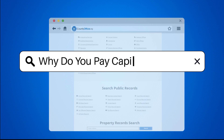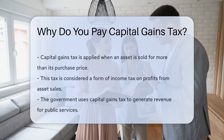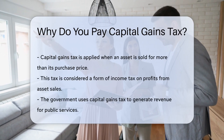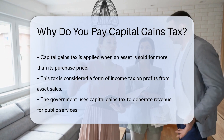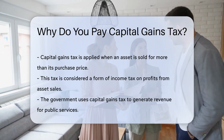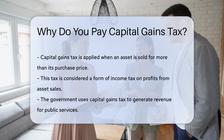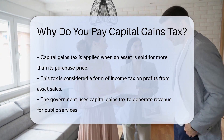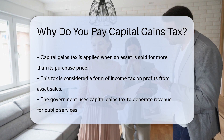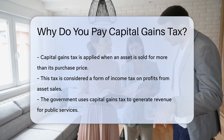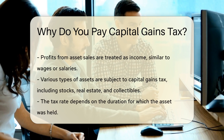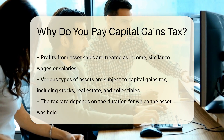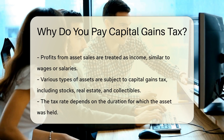Why do you pay capital gains tax? Capital gains tax applies when you sell an asset for more than you paid for it. This tax is a form of income tax on the profit made from the sale. The government imposes this tax to generate revenue, considering the profit from asset sales as income, similar to wages or salaries. This taxation system is designed to ensure that individuals contribute to public services based on their financial gains.